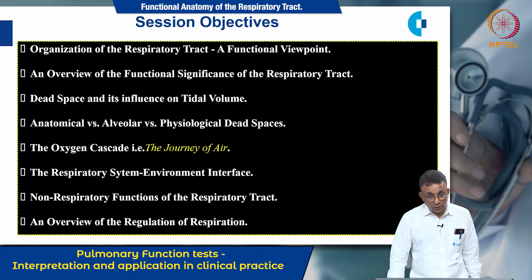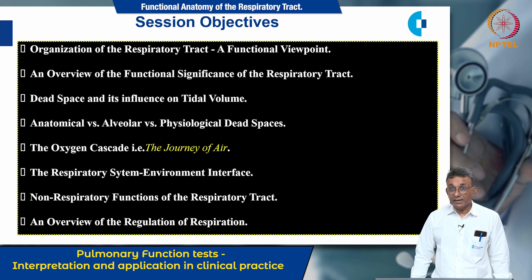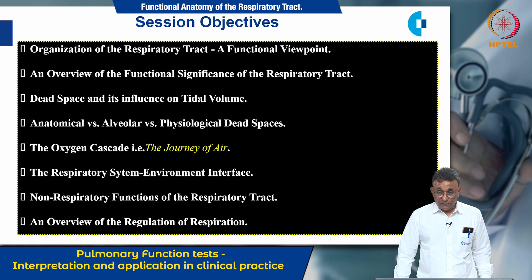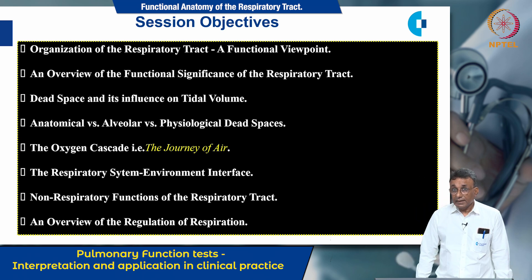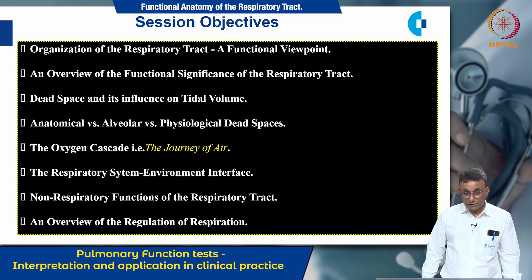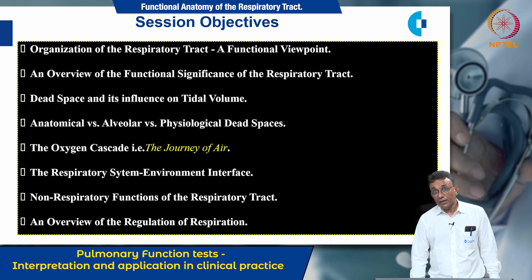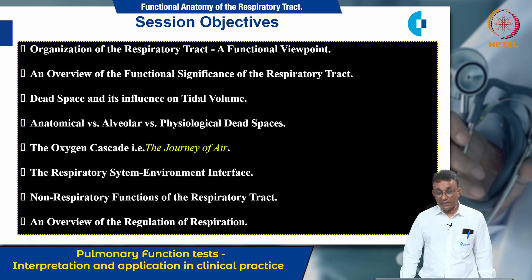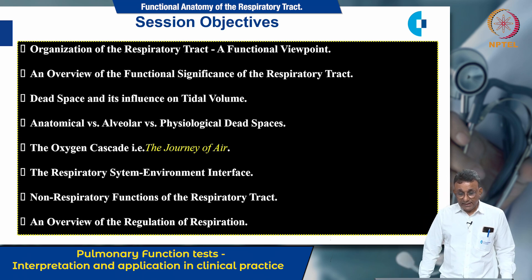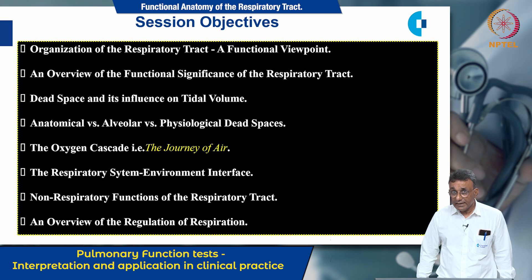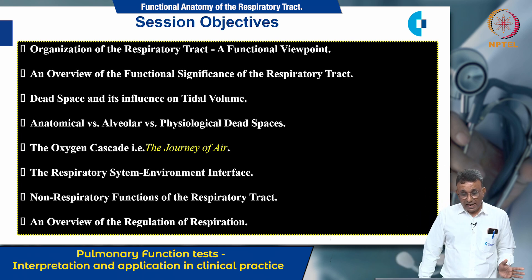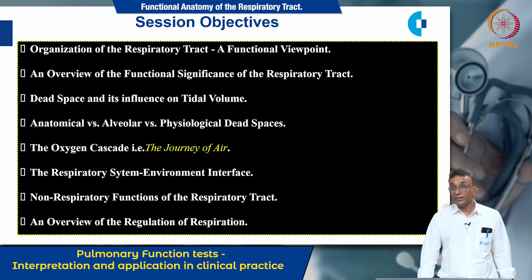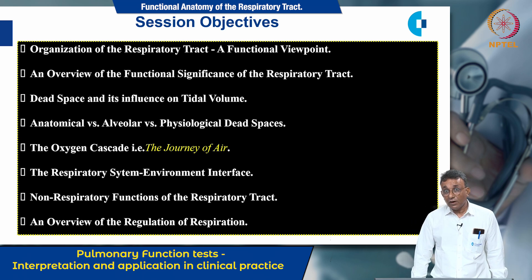My session objectives for today are as follows. First, I will add a note on the organization of the respiratory tract from a functional point of view, which will be followed by the functional significance of the respiratory tract as a whole. Then I will talk about an important index, namely the dead space and its influence on tidal volume. There are three types of dead spaces: the anatomical, alveolar, and physiological dead space. Recently, a new concept in physiology has been introduced known as the oxygen cascade, which describes the inspiratory phase of the respiratory cycle. I will also add a note on the respiratory system environment interface, namely the alveolus, and conclude by discussing the non-respiratory functions of the respiratory tract and an overview on the regulation of respiration.